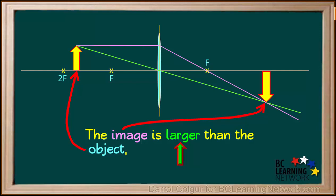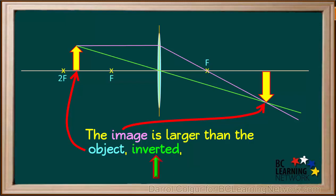To review, we see that when the object is between the 2F point and the F point, the image is larger than the object, inverted, and on the opposite side of the lens to the object.